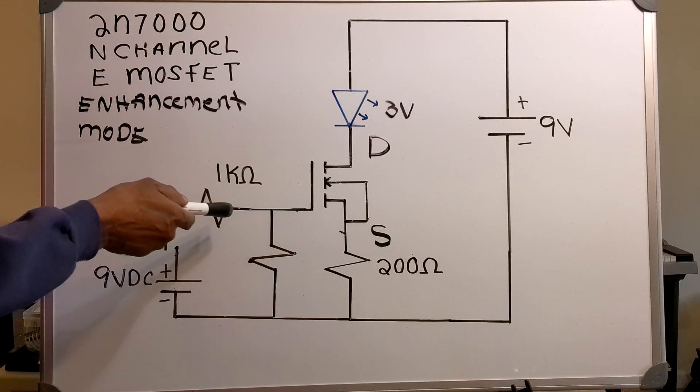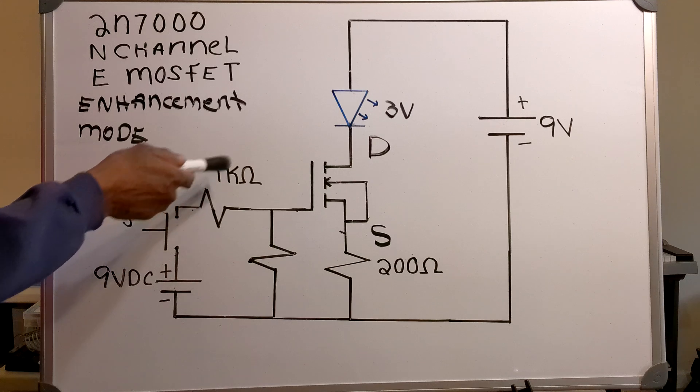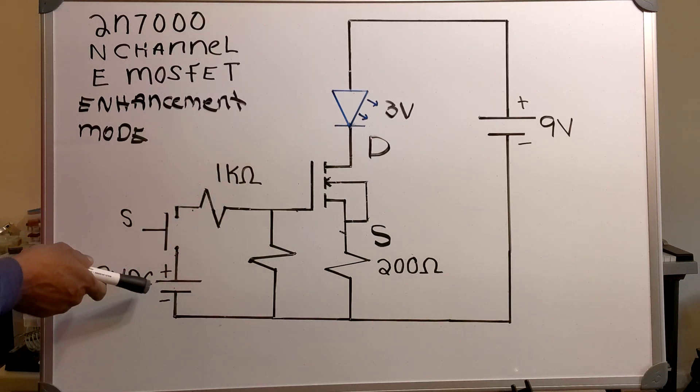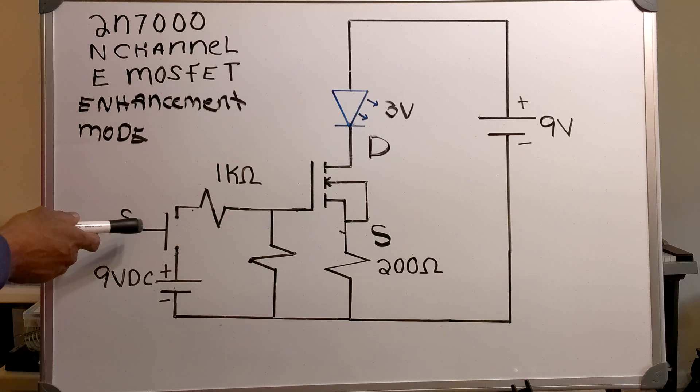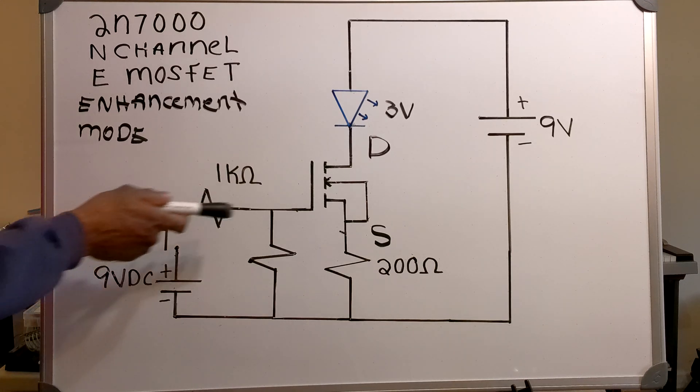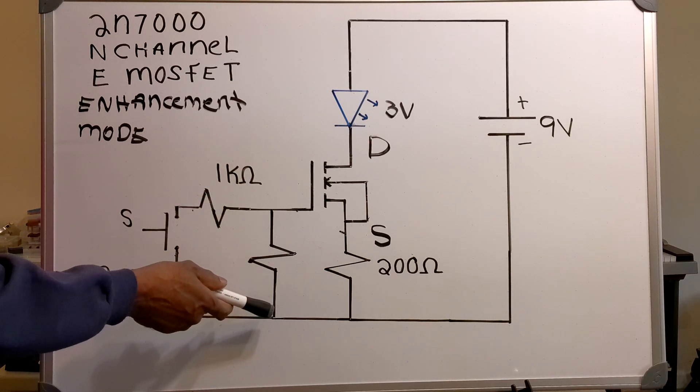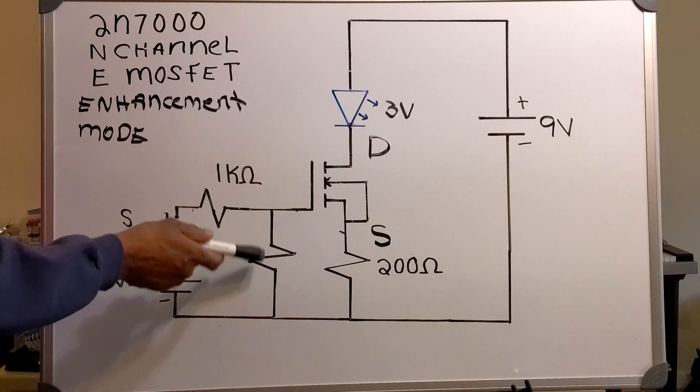Now on the gate, I've got a 1K ohm resistor. I've got a 9V DC source and a switch, and I have another resistor going from the gate to the negative side of the DC source. This value of this resistor has yet to be determined.